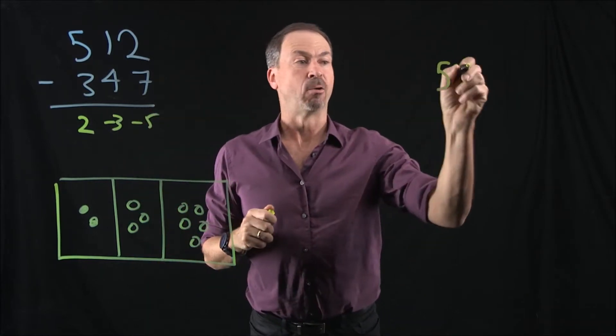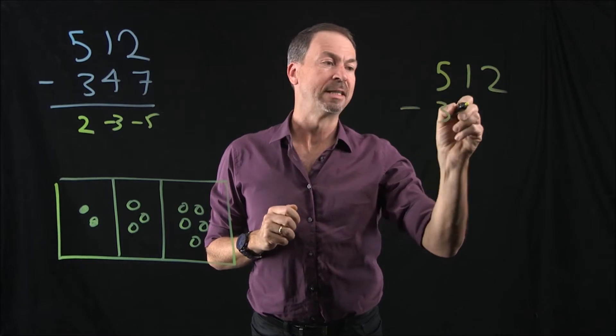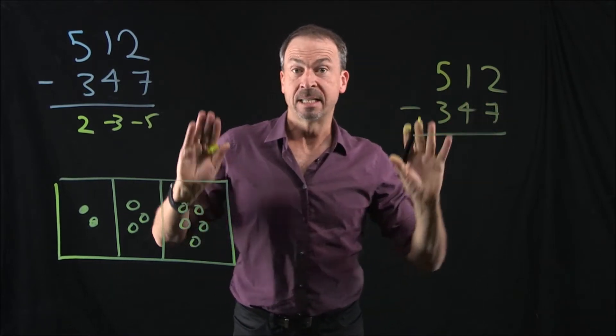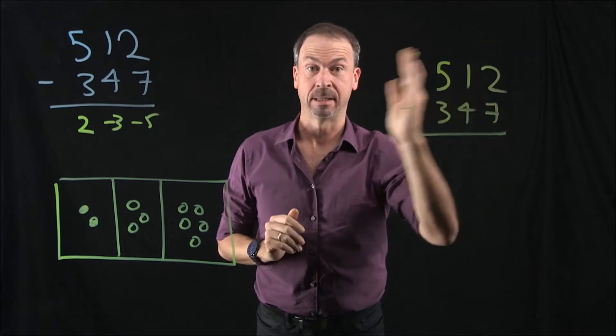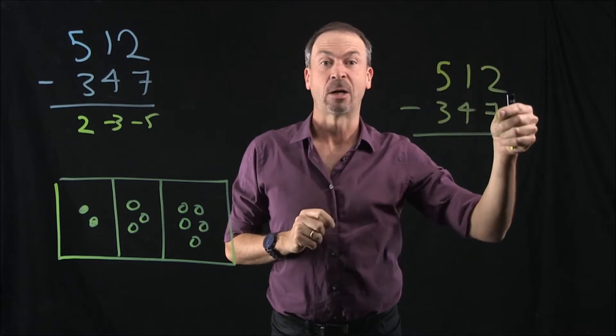All right, what's the standard algorithm? Let's see if it's actually doing the same thing. Now, it starts by going what feels backwards to me, right to left. And you say, okay, 2 take away 7.